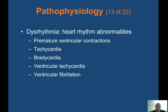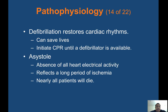Dysrhythmia includes heart rhythm abnormalities such as premature ventricular contractions or PVCs, tachycardia, bradycardia, ventricular tachycardia or V-tach, and ventricular fibrillation or V-fib. Defibrillation restores cardiac rhythms and can save lives — initiate CPR until a defibrillator is available. Asystole is the absence of all electrical activity, reflecting a long period of ischemia — essentially flatlining — and nearly all patients will die. A person in asystole has no pulse and no electrical activity in their heart.